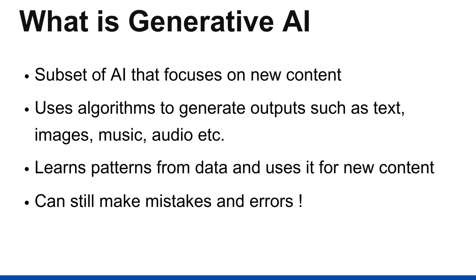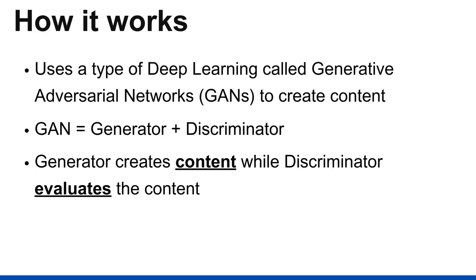How does generative AI work? I don't want to dive too deep into the underlying technology — a high-level understanding is enough to mitigate the risks. Generative AI uses a type of deep learning called Generative Adversarial Networks, or GANs. It's simple in concept — there is a generator that creates new content and a discriminator that evaluates the data. They work together: the generator keeps improving its outputs while the discriminator tries to classify them.